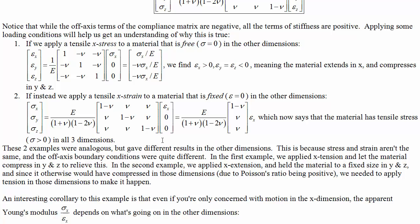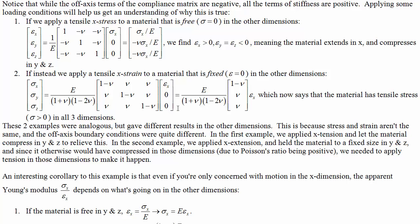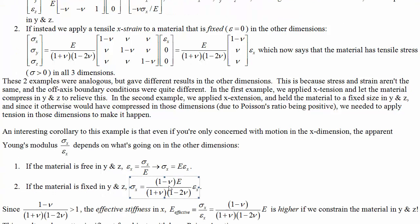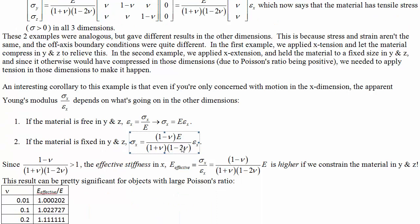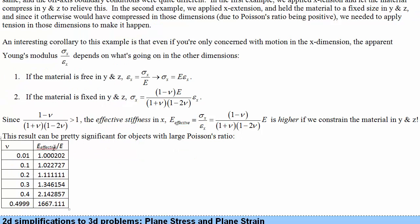If the material is fixed in other dimensions, its apparent Young's modulus is larger by the factor E(1 - nu) over (1 + nu)(1 - 2 nu). For nu = 0.01, it's barely larger; for nu = 0.3, it's about 30% bigger; but as nu approaches 0.5 — rubber's value — the effective stiffness goes toward infinity. It gets infinitely stiffer if you prevent it from moving in the other two dimensions.